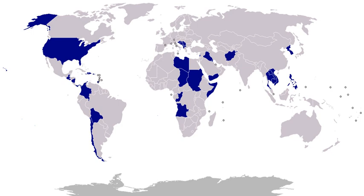1791–1794, Whiskey Rebellion: a series of protests against the institution of a federal tax on the distillation of spirits as a revenue source for repaying the nation's war bonds. The revolt was centered upon southwestern Pennsylvania, although violence occurred throughout the trans-Appalachian region. 1798–1800, Quasi-War: an undeclared naval war with France over American default on its war debt. An additional mitigating factor was the continuation of American trade with Britain, with whom their former French allies were at war.